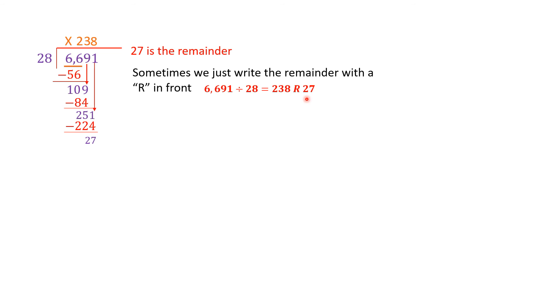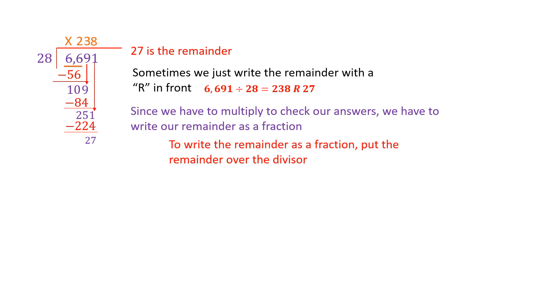Sometimes we can just write remainder with an R in front of it. We can just write 6,691 divided by 28 is 238 R27, meaning there are 27 left over. That last group has 27, not 28 in it. But the direction said multiply to check our answers. And we really can't multiply 238 R27 by something. We can't do anything with that. So we are going to have to write our answer or write our remainder as a fraction. It's not as bad as it sounds. So to write the remainder as a fraction, you're simply going to take that remainder. You're going to take 27 and you're going to write it as a fraction over 28 because that last group has 27 out of the 28 needed. So we're going to write 6,691 divided by 28 equals 238 and 27/28.